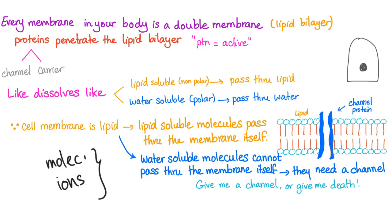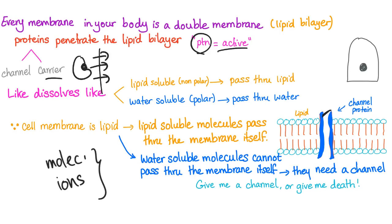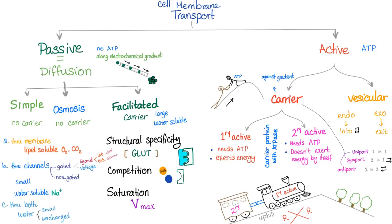Also remember: protein is the active form of anything. If something is active, it is made of protein. A channel opens and closes — so it's active, so it's made of protein. A carrier carries a molecule through the membrane — it's active, it's protein. The cell is the living unit of your body performing bodily functions, so it needs lots of active stuff. That's why proteins inside the cell are more abundant than proteins outside the cell.